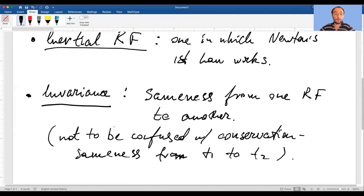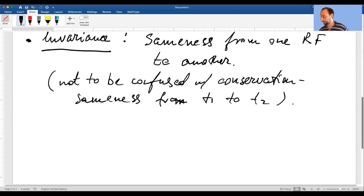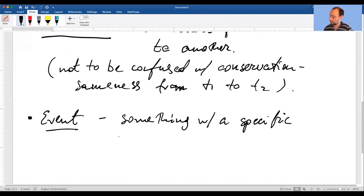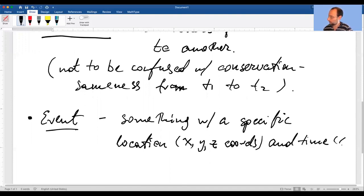And the final term that we have to get under our belts is something called an event. It's term number four, and that's simply something with a specific location, say x-y-z coordinates, and time t.